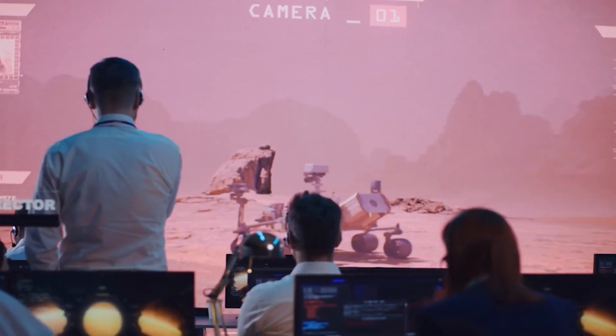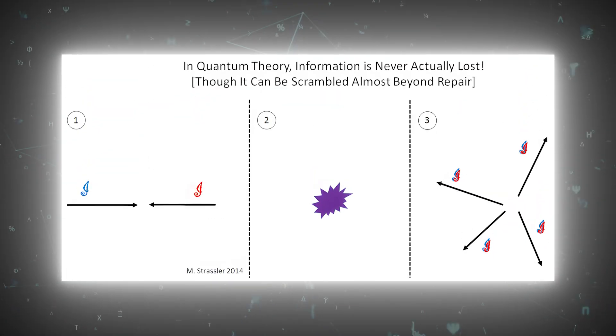This paradox has led to significant debate and research in the scientific community. Some theories propose that information is somehow preserved in a scrambled form on the event horizon, or that it escapes via Hawking radiation, though a definitive answer remains elusive.